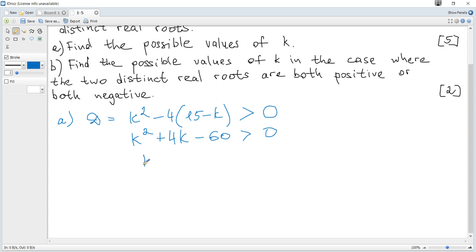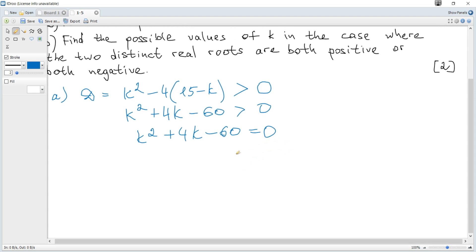Then we need the roots, so we should consider k² + 4k - 60 = 0. I will use the discriminant. You may try to factorize or use the sum and product rule.